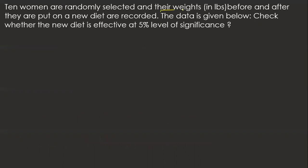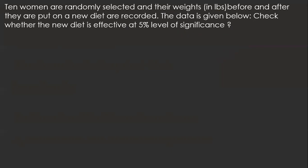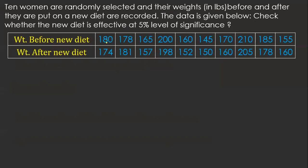Now the example: 10 women are randomly selected and their weights in pounds are recorded before and after they are put on a new diet. We record the weight before the diet, then give them the diet, then measure their weights in pounds again. The data is given below. Check whether the new diet is effective at a 5% level of significance, so alpha equals 0.05.